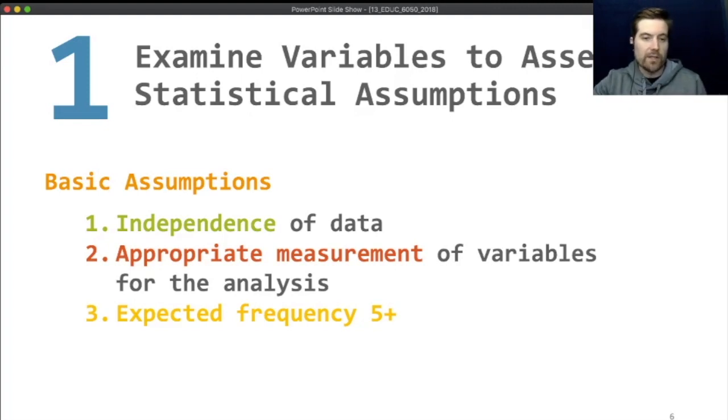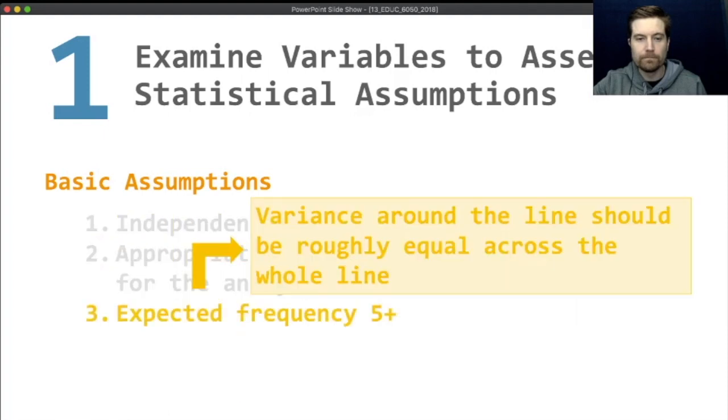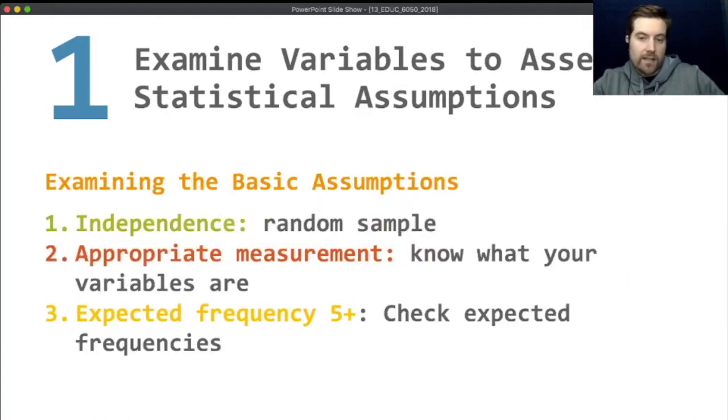For chi-square, the assumptions are pretty minimal. You have independence of data. You don't want people influencing each other's data. We want the appropriate measurement, which in this case is categorical variables. And then the last one is that the expected frequency per cell is five or more. That means if you have certain things that are really rare, you need to get a big sample in order to have several of them represented in the data. Jamovi gives us those values so we can check them pretty easily.